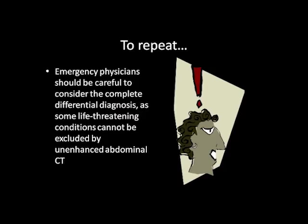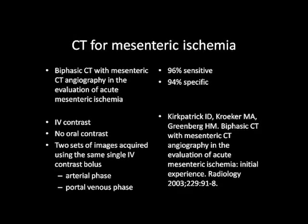Consider the example of CT for mesenteric ischemia. Biphasic CT with mesenteric CT angiography is a technique in which IV contrast is injected but no oral contrast is used. Two sets of images are acquired using the same single IV contrast bolus. First, shortly after intravenous contrast injection, images are acquired demonstrating filling of the aorta and its proximal branches, including the mesenteric blood vessels. After a short delay, another set of images is acquired demonstrating filling of the portal venous system with contrast.